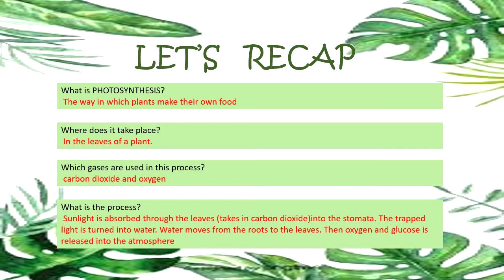And what is the process of photosynthesis? Sunlight is absorbed through the leaves and carbon dioxide enters through the stomata. Water moves from the plant's roots to the leaves. Then oxygen and glucose are released into the atmosphere.